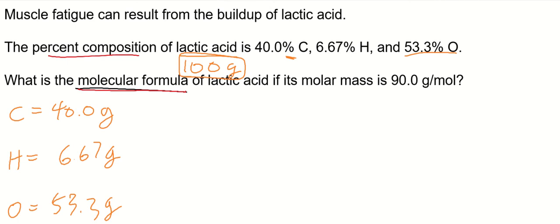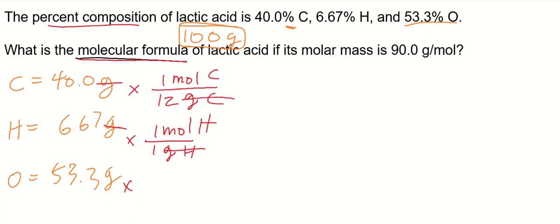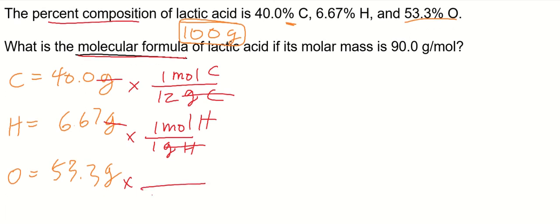Now step two. The whole point of that was to get moles. Now we can do that because we have grams. Carbon is 12 grams per one mole, so we can cancel these grams out. Now we have moles. Hydrogen is one gram per mole, so we can cancel out the grams and we're left with moles. Oxygen is 16 grams per mole. Now we need a calculator. Let's punch these numbers in.